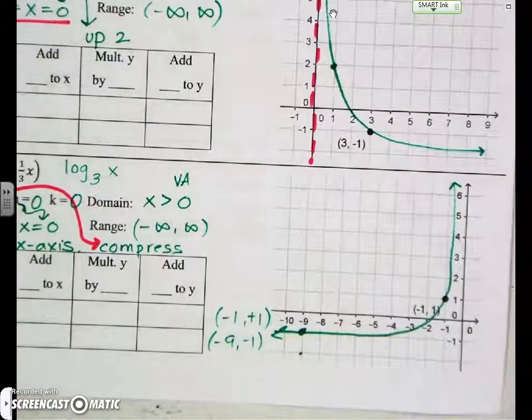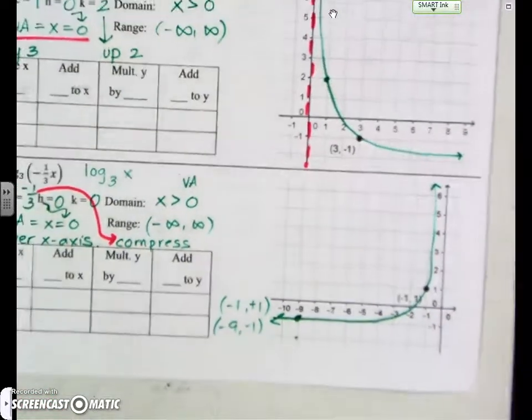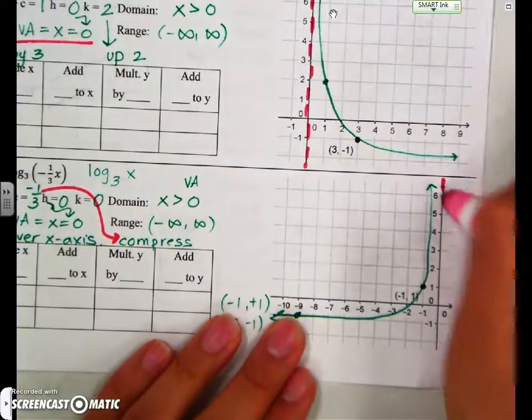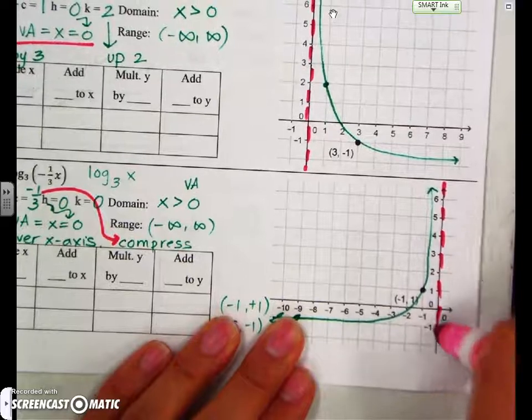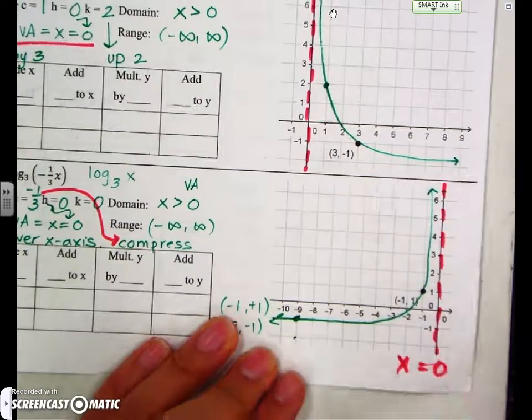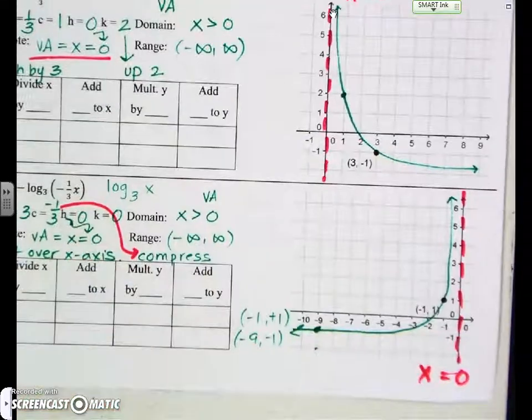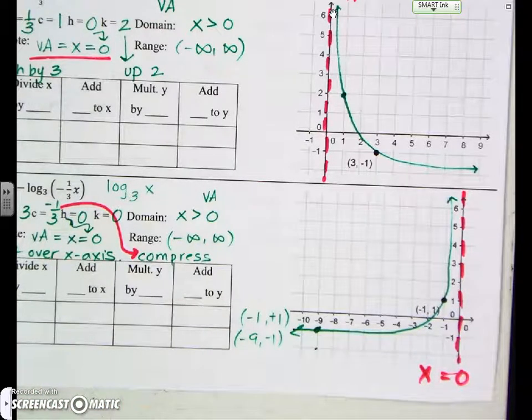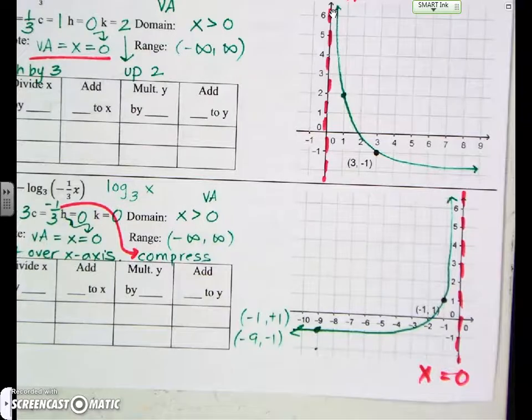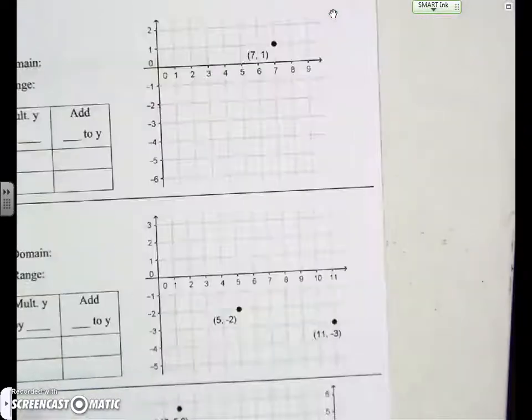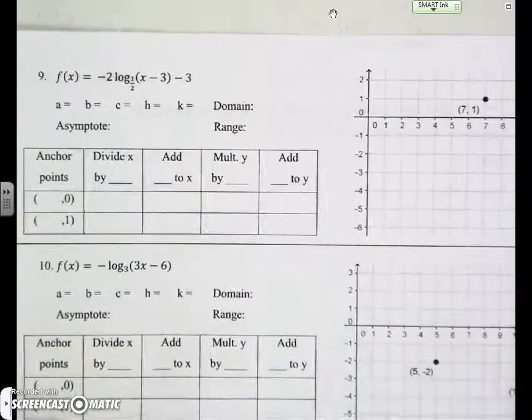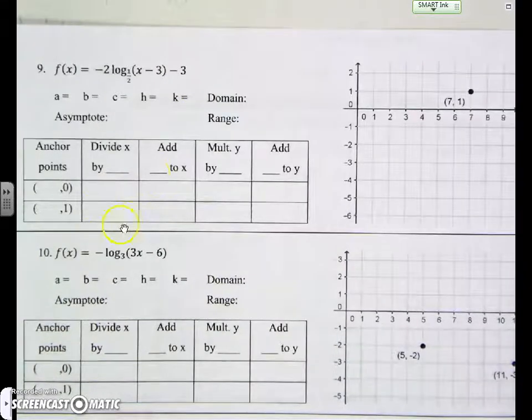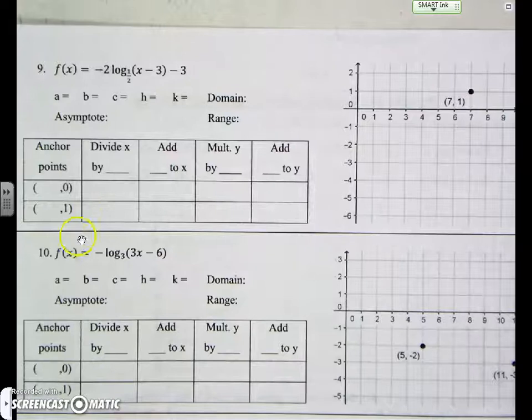And then where is our vertical asymptote? Where is that imaginary line that the graph doesn't cross? At x equals 0. Questions? Is that okay? Let's go to the next one, number 9. I'm going to give you guys two minutes. Pause the video. Go ahead and do the first part of number 9.